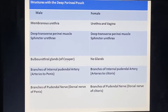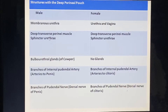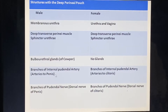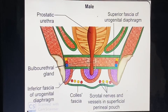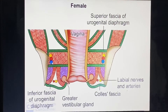Structures in the deep perineal pouch: in males the membranous urethra is present; in females, the urethra and vagina. Other structures include different muscles, glands, and branches of the internal pudendal artery and pudendal nerve.